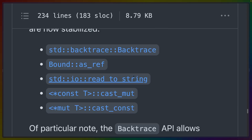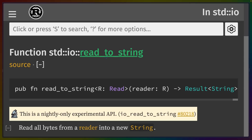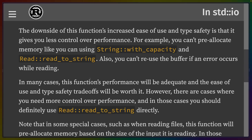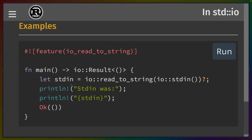Another stabilized API that's interesting is read_to_string. std::io::read_to_string reads all the bytes from a reader into a new owned String. We gain a little bit in ease of use, and you can always drop down to the lower-level APIs for more control. One example reads from standard in into a string, giving you stdin as a string, which is really nice.